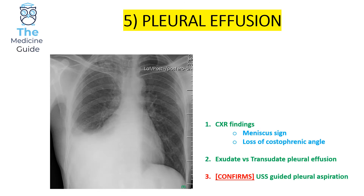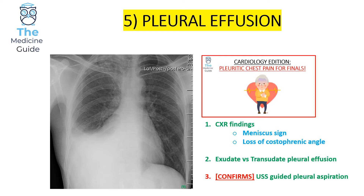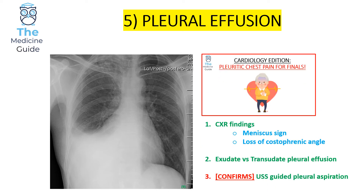This is an example of a pleural effusion. The classical findings on this chest x-ray include the meniscus sign — that nice U-shaped bend visible at the right base — and also the loss of the costophrenic angle.